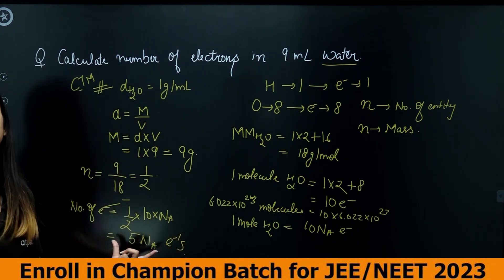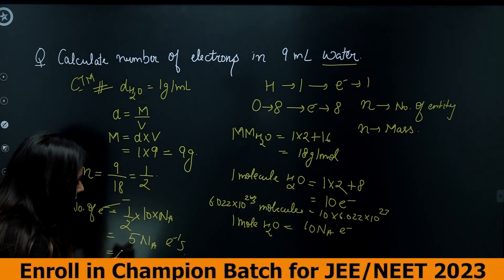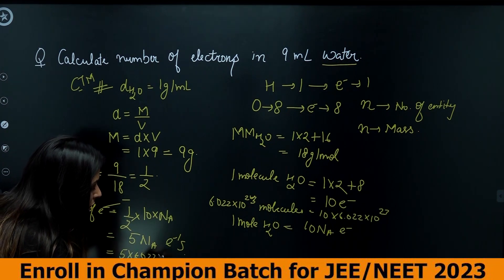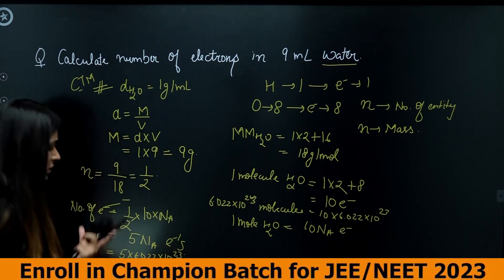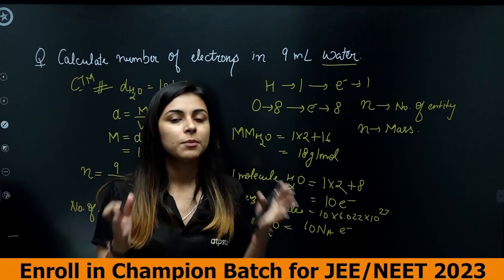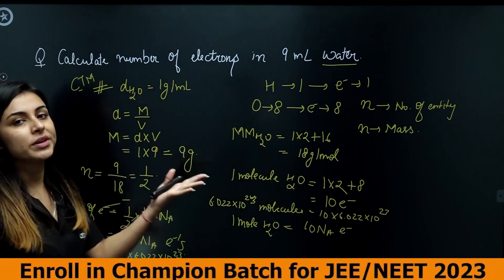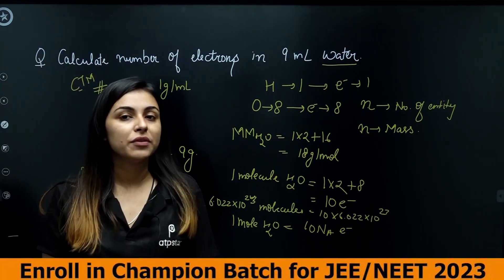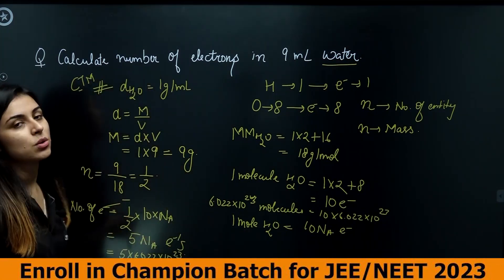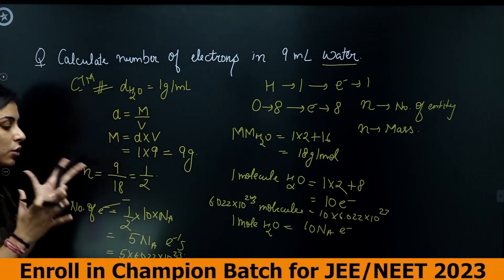So the answer is 5 Avogadro's number of electrons, or 5 × 6.022 × 10²³. Options may present it either way. If the concept is clear, you will have no doubt solving such questions.